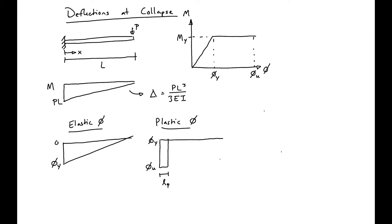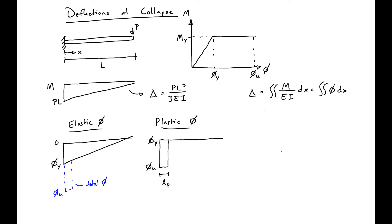Our total curvature will just look something like this. We can then find our deflections — our deflections are equal to the double integral of M over EI dx, which is just equal to the integral evaluated of the curvature. We can use whatever method we want; I'll use the moment area method.